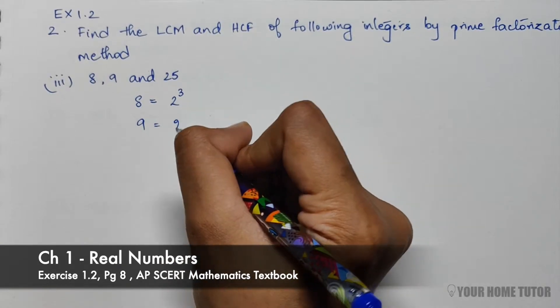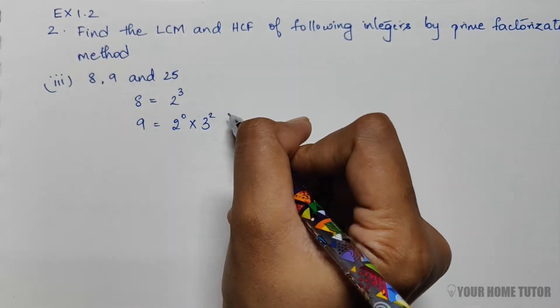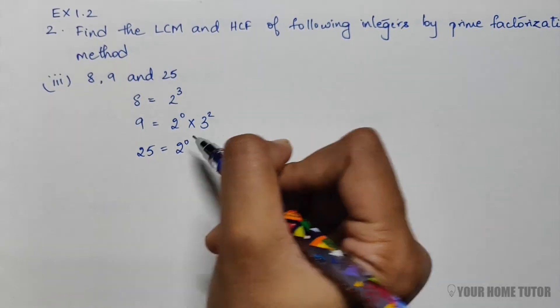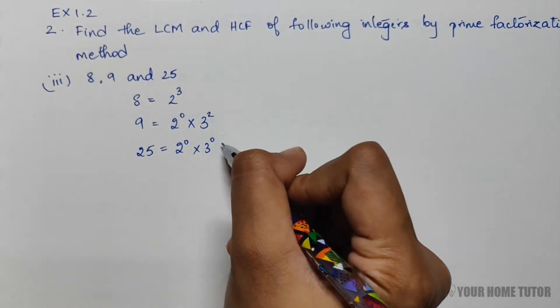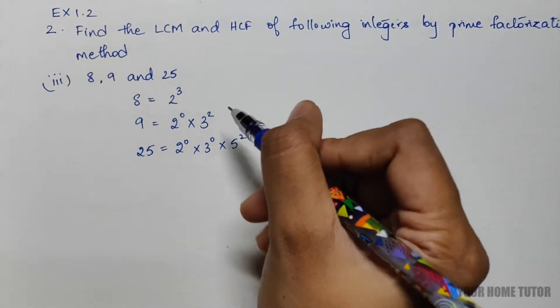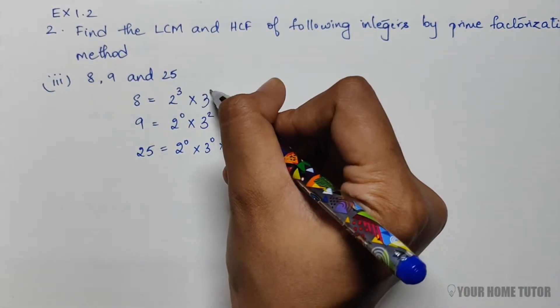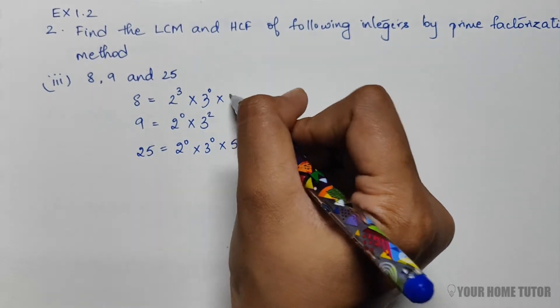be written as 2⁰ × 3². And 25 similarly can be written as 2⁰ × 3⁰ × 5². So here I've written all numbers with the same prime factors, including the zero powers.